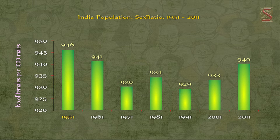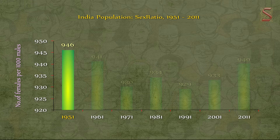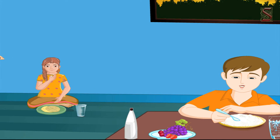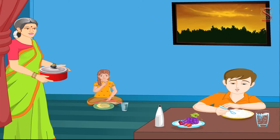From this graph we can see the sex ratio between 1951 and 2011. The number of females per thousand males in 1951 was 946, while the number fell to 940 in 2011. We can see that the number of females has continuously been lower than that of men. The low number indicates discrimination in society, as many women still do not get equal opportunities.